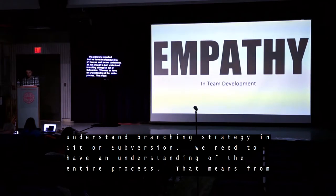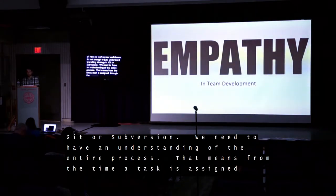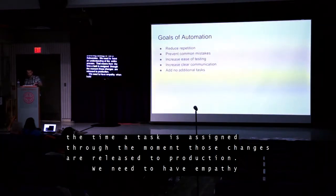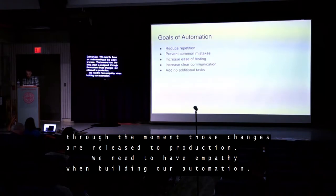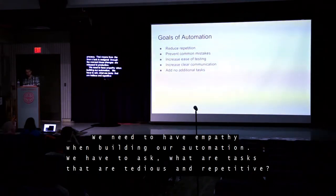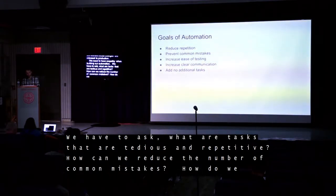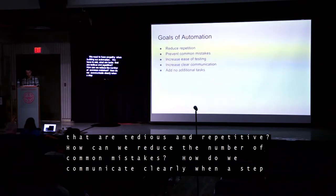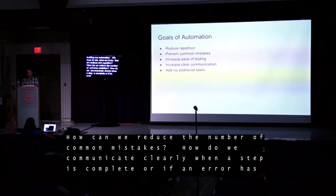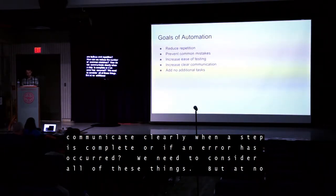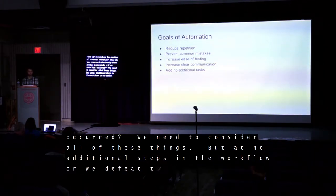That means from the time a task is assigned through the moment those changes are released to production. We need to have empathy when building our automation. We have to ask: what are tasks that are tedious and repetitive? How can we reduce the number of common mistakes? How do we communicate clearly when a step is complete or if an error has occurred? We need to consider all of these things but add no additional steps in the workflow, or we defeat the purpose.